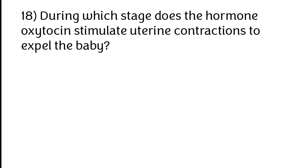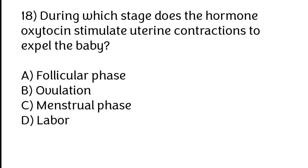During which stage does the hormone oxytocin stimulate uterine contractions to expel the baby? Options: A) Follicular phase, B) Ovulation, C) Menstrual phase, D) Labor. The correct answer is option D, labor.